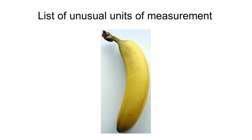An unusual unit of measurement is a unit of measurement that does not form part of a coherent system of measurement, especially in that its exact quantity may not be well known or that it may be an inconvenient multiple or fraction of base units in such systems. This definition is not exact since it includes units such as the week or the light year, which are quite usual in the sense that they are often used, but which can be unusual if taken out of their common context, as demonstrated by the Furlong/Furlong/Fortnight FFF system of units. Many of the unusual units of measurements listed here are colloquial measurements, units devised to compare a measurement to common and familiar objects.